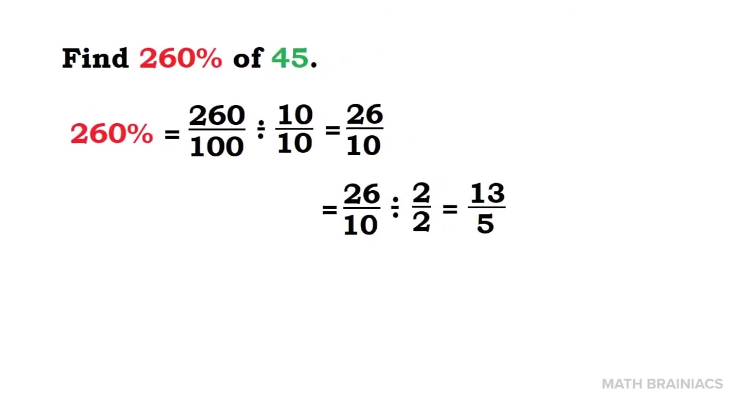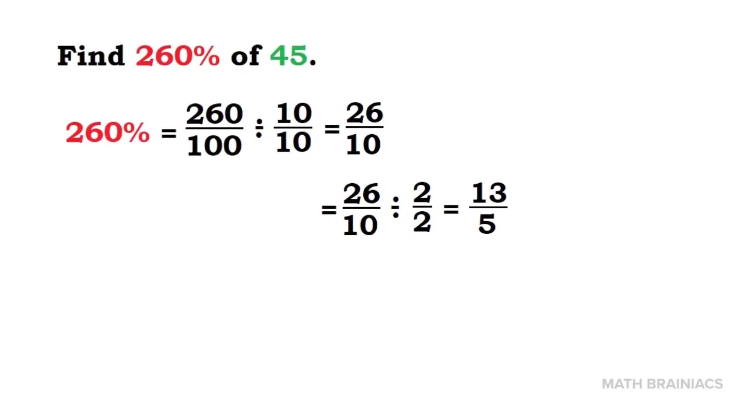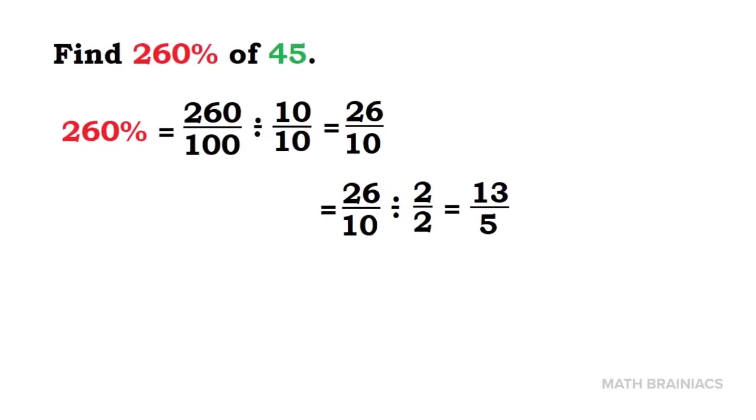26 over 10 is not yet in the simplest form. We're going to look for the common factor of 26 and 10, and in this case, it is 2. Accordingly, 26 divided by 2 is 13, and 10 divided by 2 is 5.